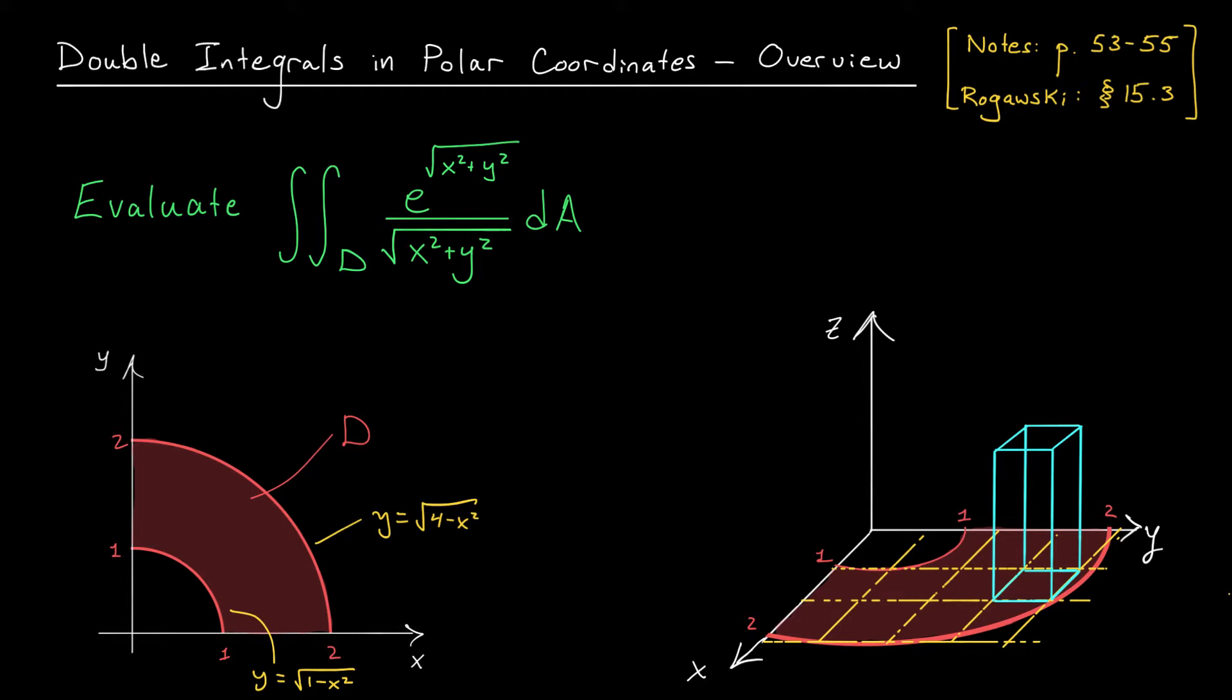In fact, setting up the integral isn't an easy task either. After all, this region D is not a region of type 1, because over here, my lower bound is given by the circular arc, but over here, my lower bound is given by the x-axis. Likewise, this isn't a region of type 2. Over here, the circular arc is our leftmost curve, but over here, it's the y-axis. So we're being asked to integrate a gross function over a gross region. What do we do?